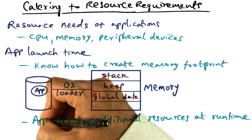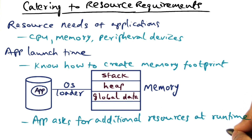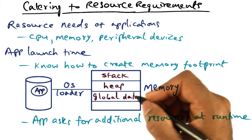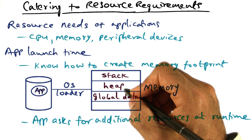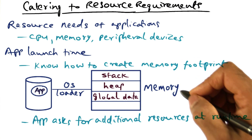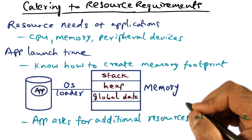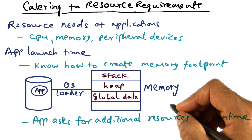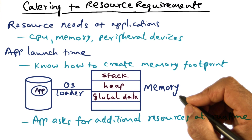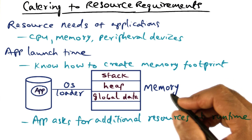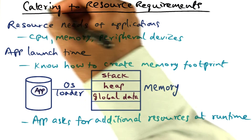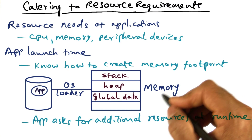Once a program starts running, can the application ask for additional resources at runtime? Of course — this is exactly the service provided by the operating system. For example, if the application needs more memory, it can make an operating system call. Similarly, if it needs to make a connection to access a web server, it makes an operating system call. The operating system then performs the service on behalf of the application, and the application can continue with whatever it needs to get done. That's how an operating system caters to the resource requirements of applications.